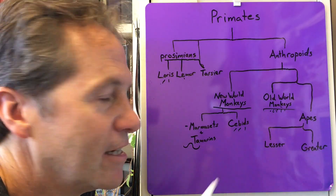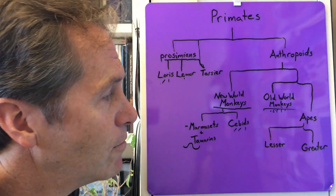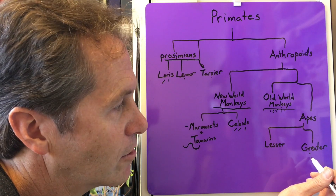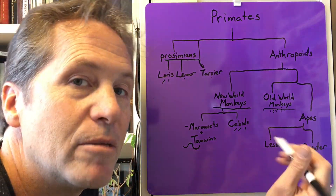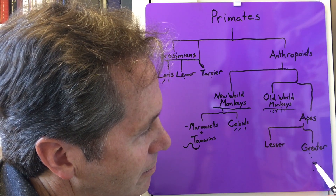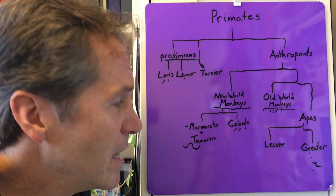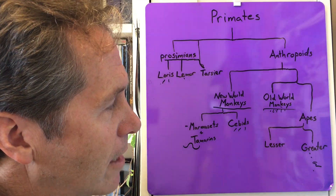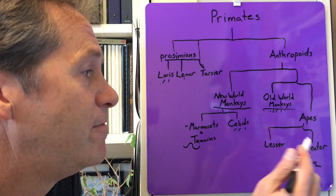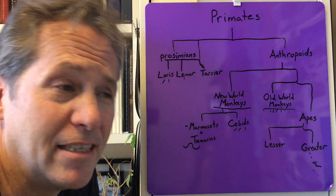Finally, the apes — lesser and greater. The lesser apes are the gibbons and siamangs, largely found in Southeast Asia. The greater apes include orangutans, gorillas, chimpanzees — which also includes bonobos as a subcategory — and humans. Greater apes have no tails, are physically very large, and have big brains. Apes are mostly Africa-focused, with the exception of the orangutan, which is found in Indonesia and on the island of Borneo.